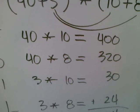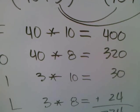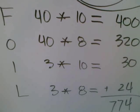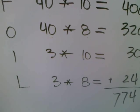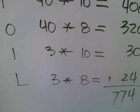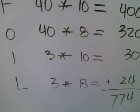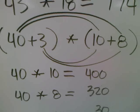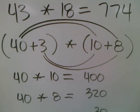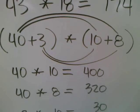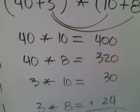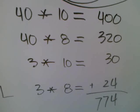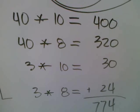So 3 times 10 is written down. And the last letter is L, which stands for last. The last numbers in the example problem are the 3 and the 8, and so 3 times 8 is written down.